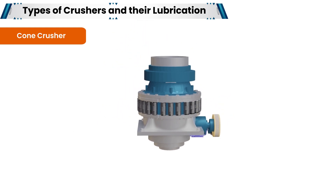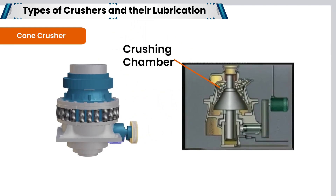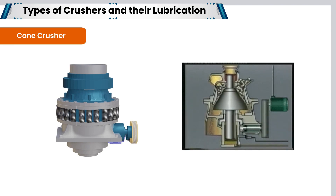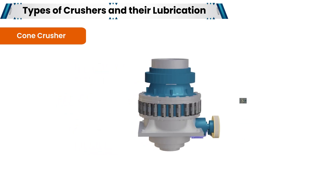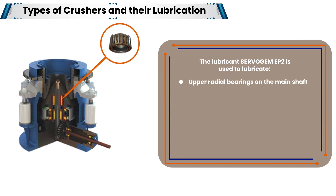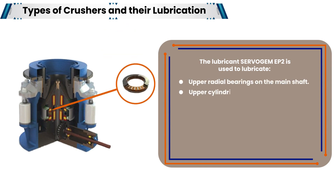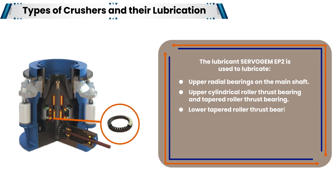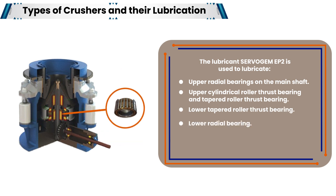The section of the movable cone near the fixed cone is the crushing chamber, and the stones and ores are repeatedly crushed and impacted by the movable and fixed cone. When the movable cone leaves the section, the materials that have been crushed to the required particle size are discharged from the outlet of the cone. The lubricant Servo GEM EP2 is used to lubricate upper radial bearings on the main shaft, upper cylindrical roller thrust bearing, tapered roller thrust bearing, lower tapered roller thrust bearing, lower radial bearing, and main shaft support bearing.